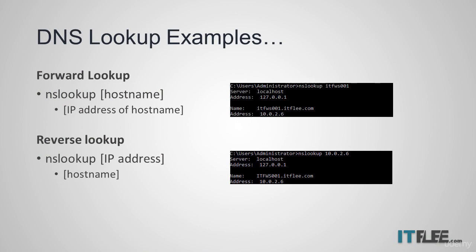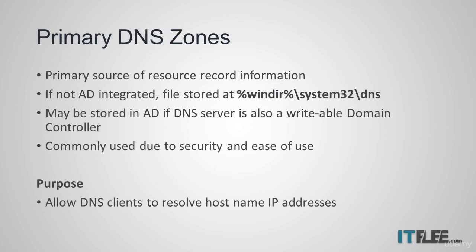Both forward and reverse lookup zones can contain primary, secondary, and stub zones. A primary zone is a DNS zone where this DNS server is the primary source of information. By default, the data for this zone is located in a file under the Windows directory at System32/DNS. This file may also be stored in Active Directory if this DNS server is also a writable domain controller.